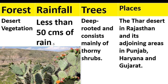Desert vegetation receives less than 50 centimeters of rainfall. These are deep-rooted plants and thorny shrubs. The Thar desert in Rajasthan and its adjoining areas in Punjab, Haryana, and Gujarat have this type of vegetation. Cactus is the most commonly found vegetation here.